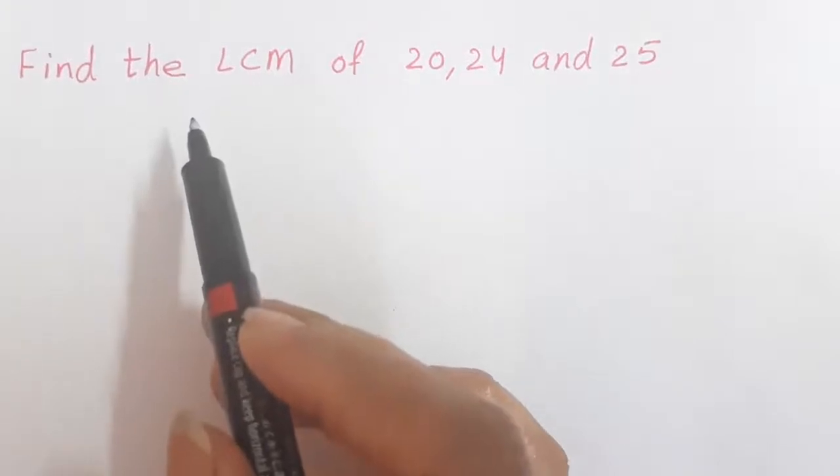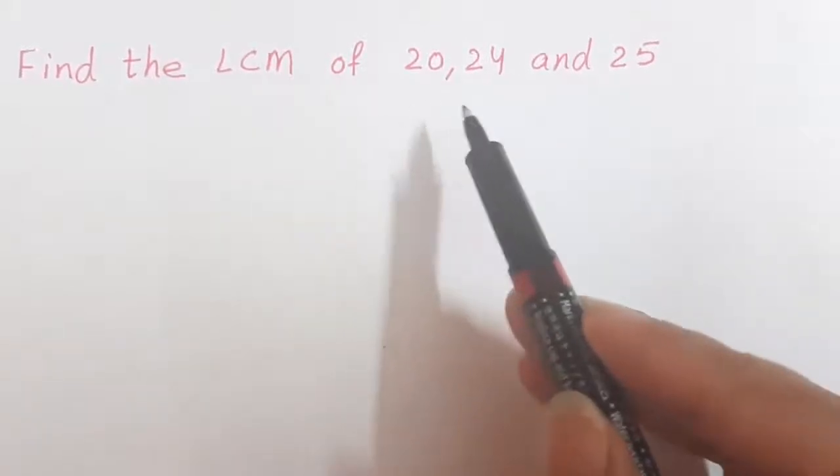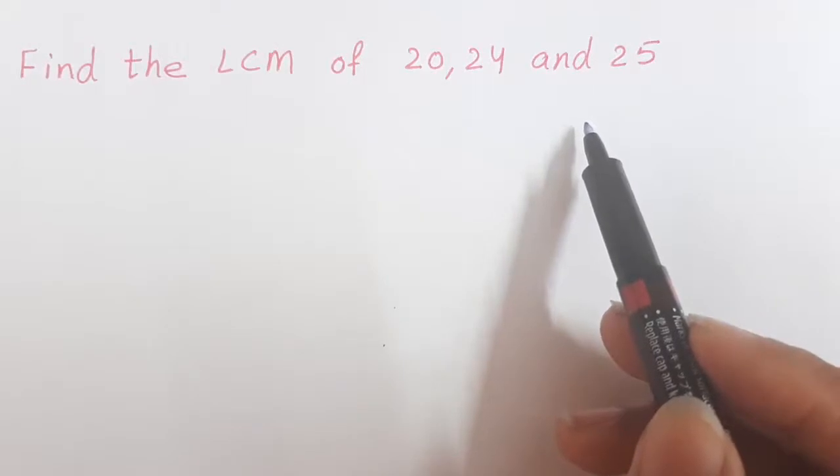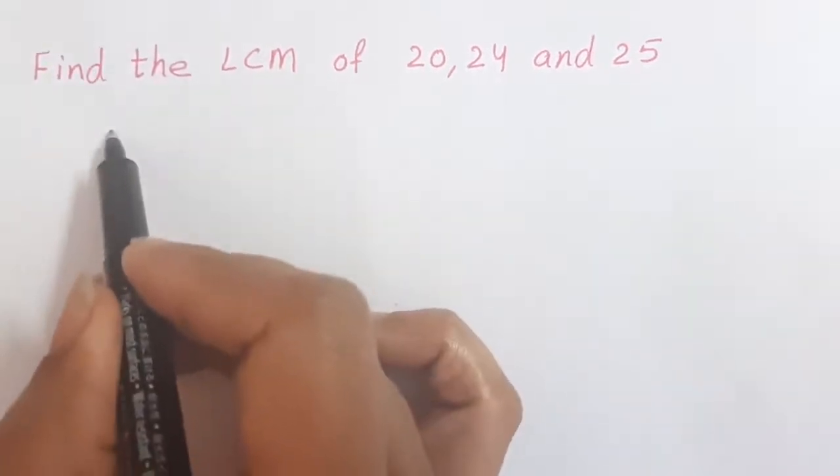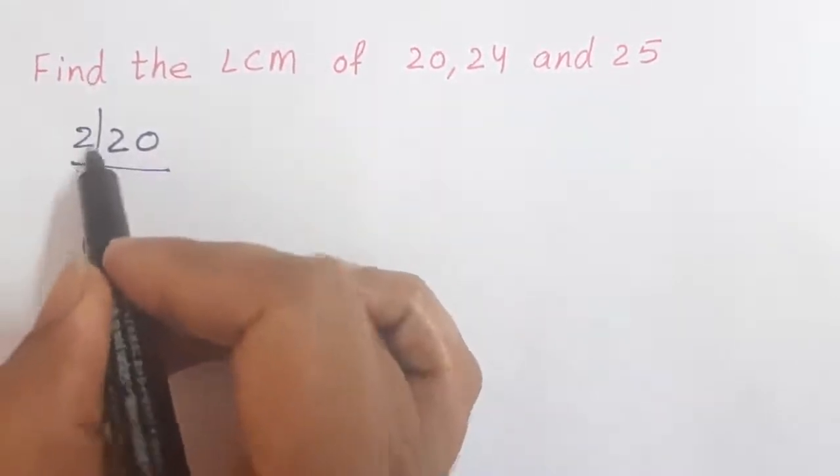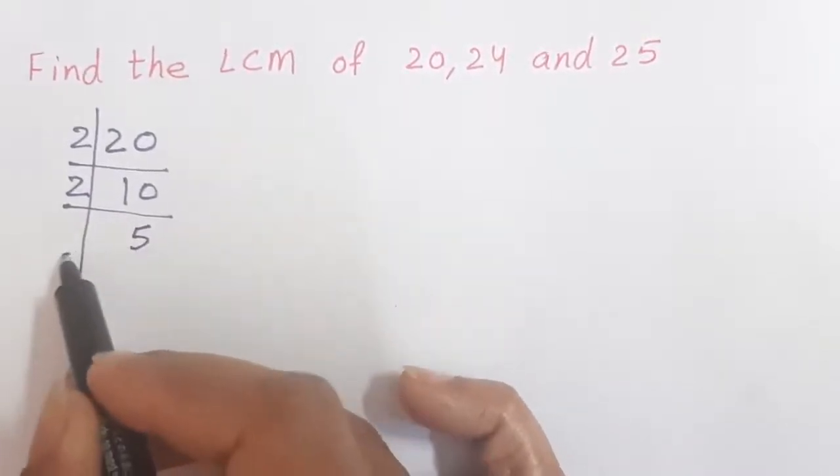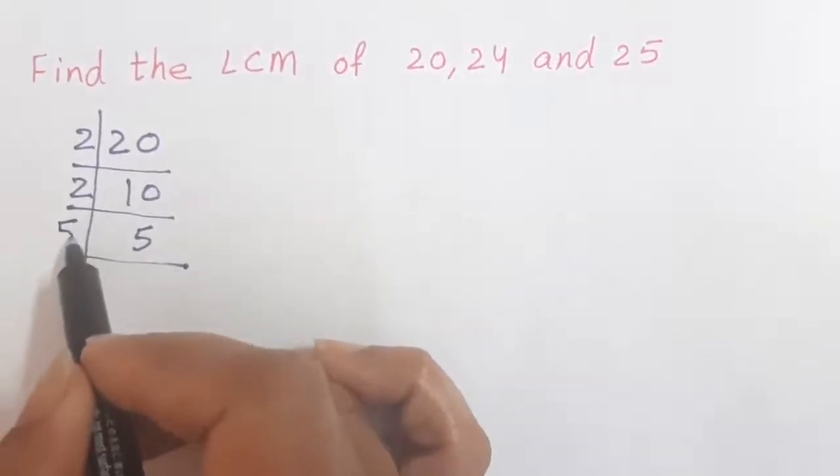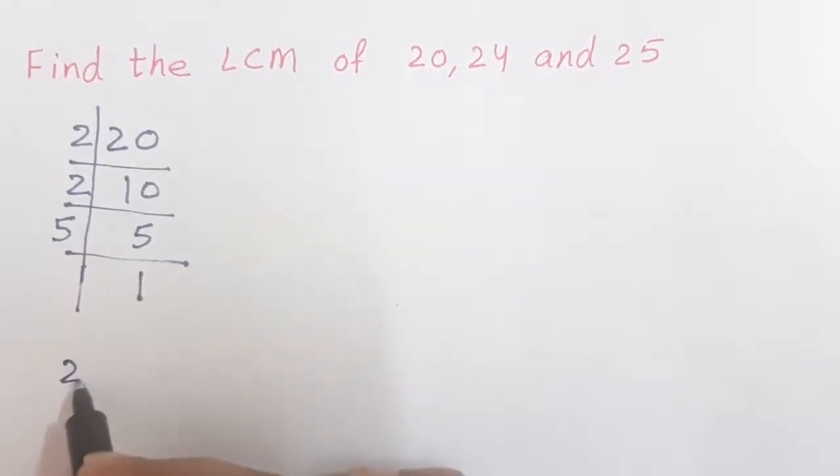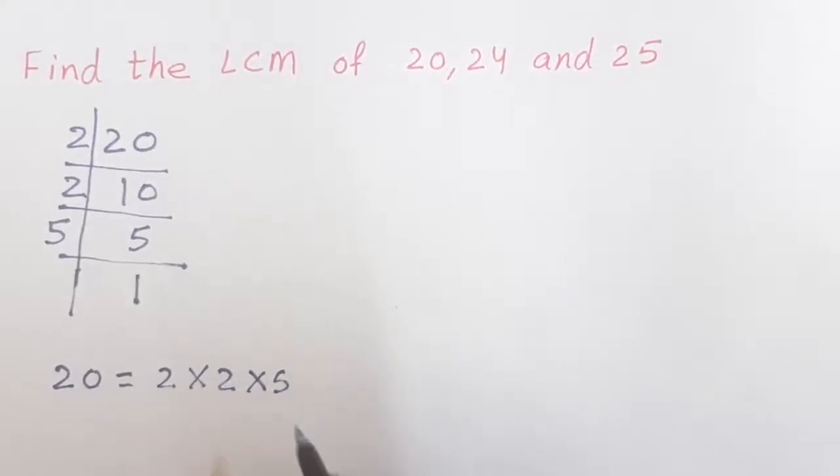Now students, let us see how to find the LCM of 20, 24 and 25 by Prime Factorization Method. Let us take 20 first of all. This is 2, 10s are 20, then 2, 5s are 10, then 5, 1s are 5. So, 20 is equal to 2 multiply by 2 multiply by 5.